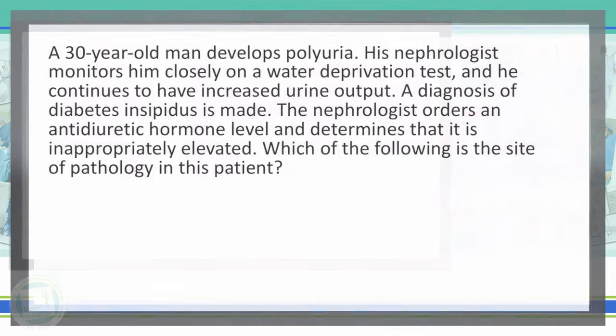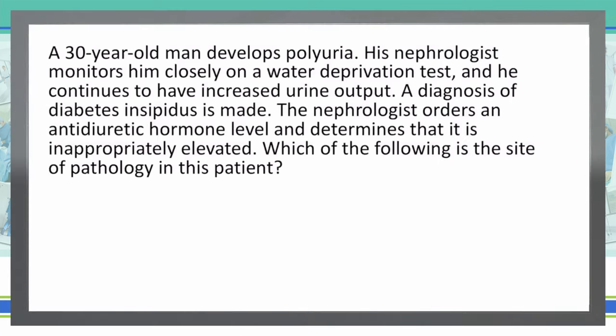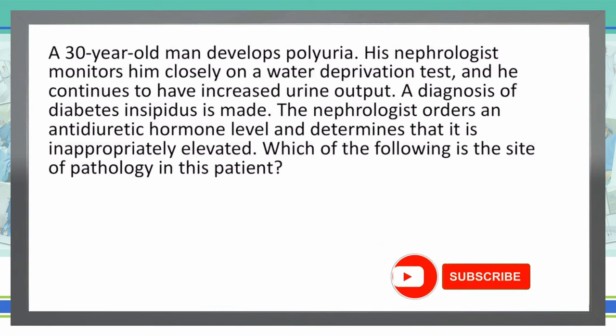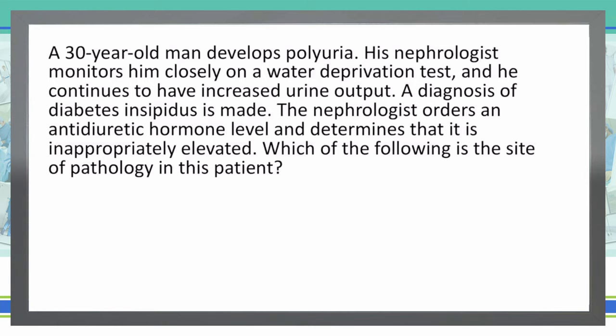Let's get right to that question. As always, we start with the last sentence of the vignette and then work our way back. Which of the following is the site of pathology in this patient? A 30-year-old man develops polyuria. His nephrologist monitors him closely on a water deprivation test, and he continues to have increased urine output. A diagnosis of diabetes insipidus is made. The nephrologist orders an antidiuretic hormone level and determines that it is inappropriately elevated.